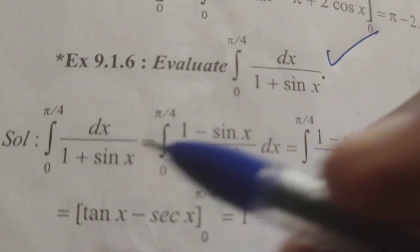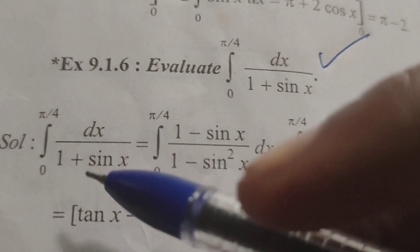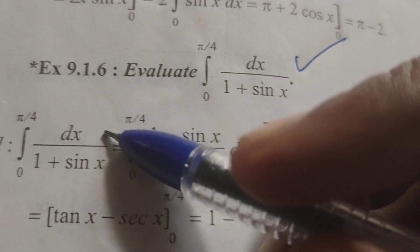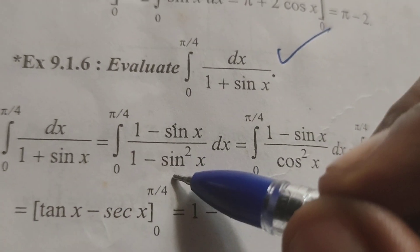First of all write the given problem. Integral 0 to pi by 4, denominator opposite sign 1 minus sin x. Multiplying numerator and denominator.